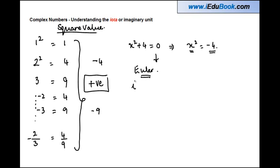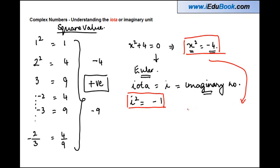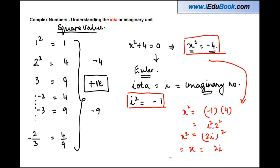In order to solve these kinds of situations, there was a mathematician called Euler who introduced the concept of iota, or i, also known as the imaginary number. The concept he propagated was that i squared is equal to minus one. So looking at the equation x squared equals minus four, we can write this as x squared equals minus one times four, and replacing minus one with i squared, we get x squared equals i squared times two squared.